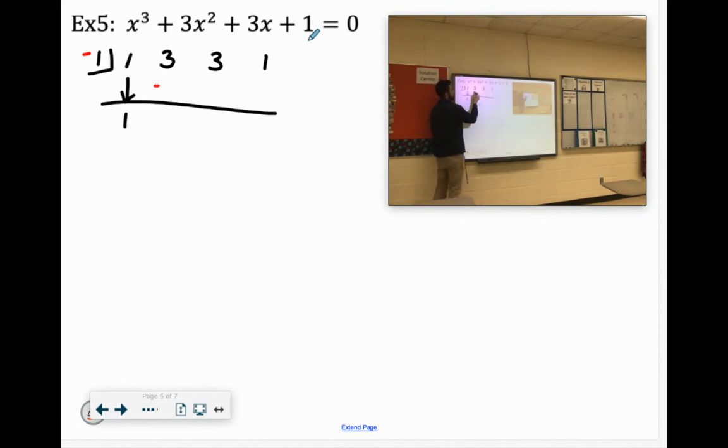Negative one times one is negative one. Three plus negative one is two. Negative one times two is negative two plus three is one. Negative one times one is negative one plus one is zero. Fantastic. Negative one is one of our zeros.